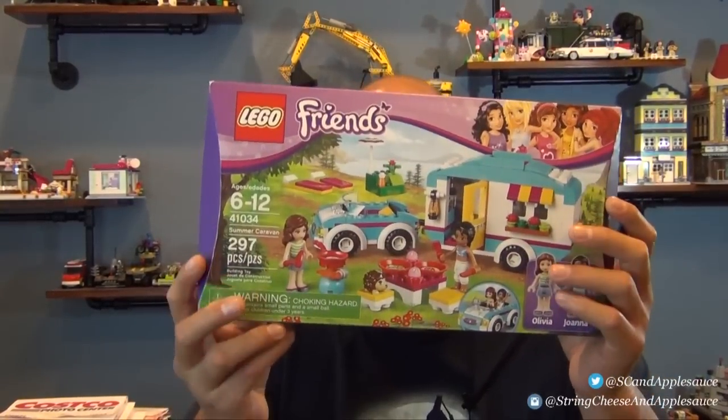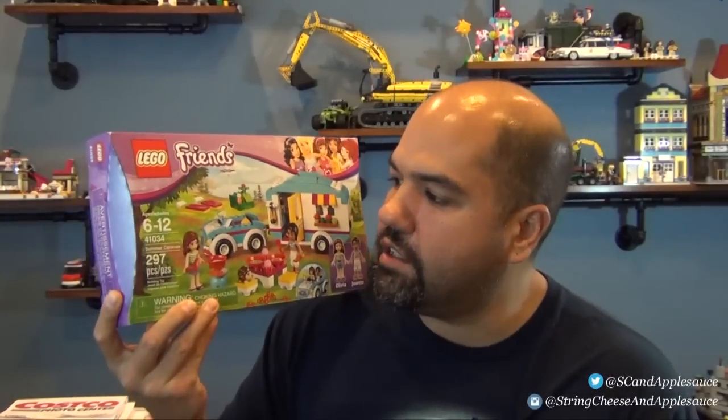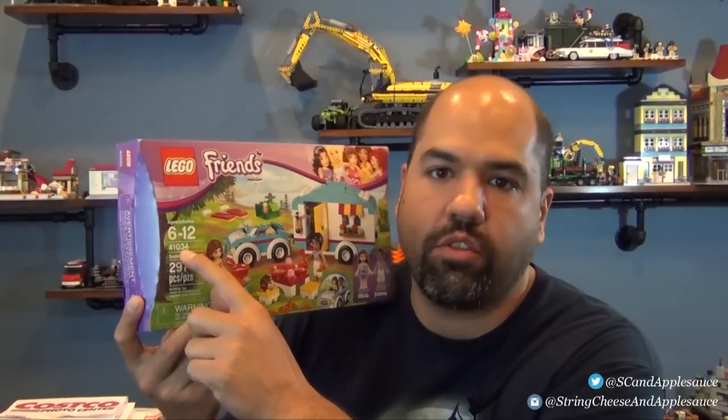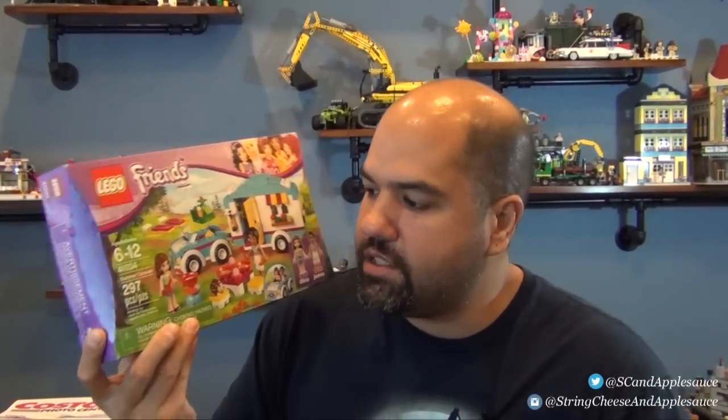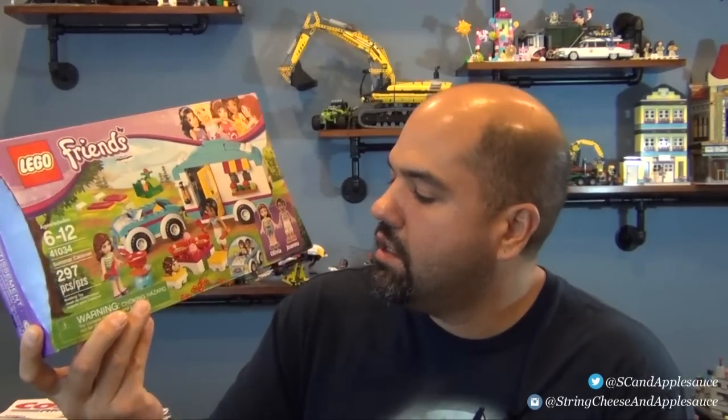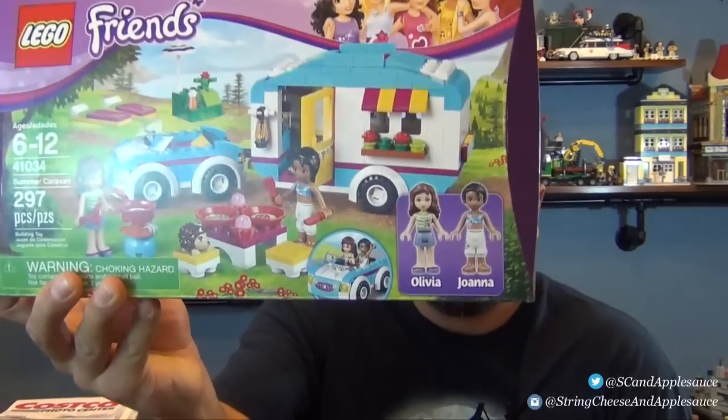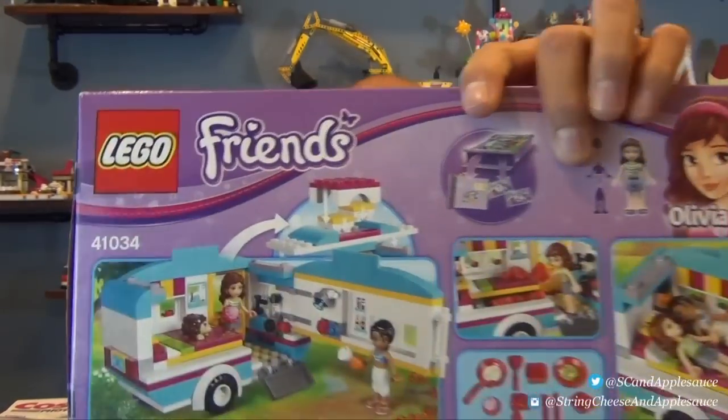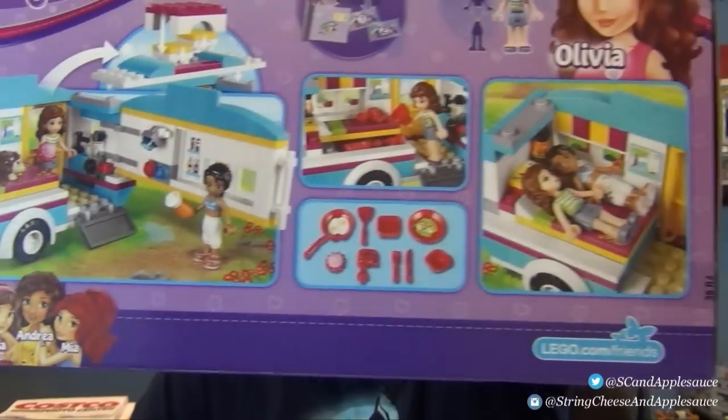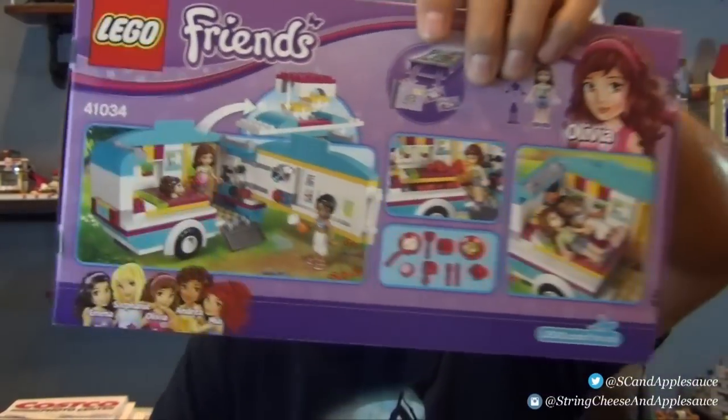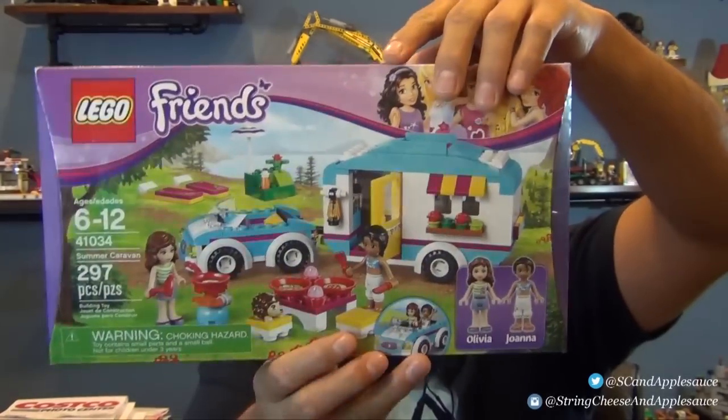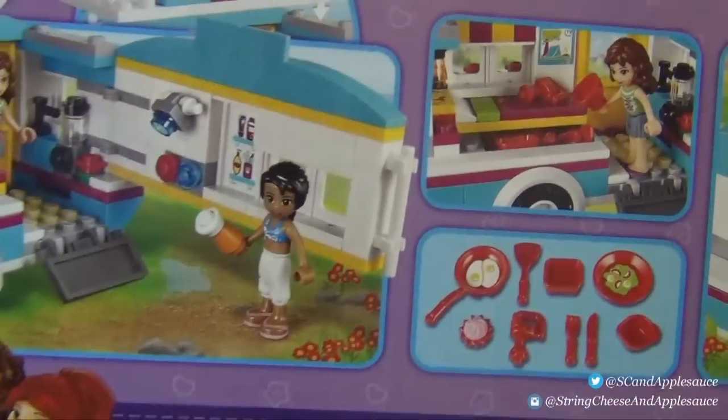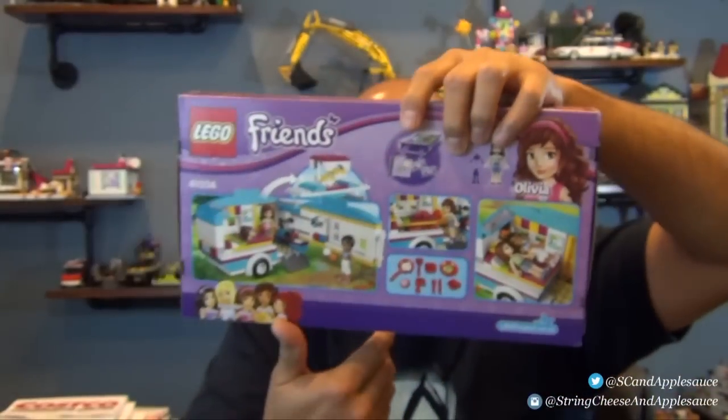Hey everyone, welcome back to String Cheese and Applesauce, where today we're going to build the LEGO Friends Summer Caravan. This is set number 41034, it comes with 297 pieces and Olivia and Jonah minifigures. Let's go ahead and see the back. That's the box, those things right there look like they're stickered on the pan. We'll find out. Let's get this built.